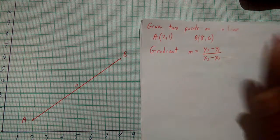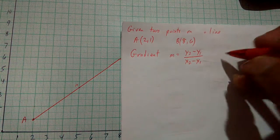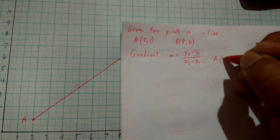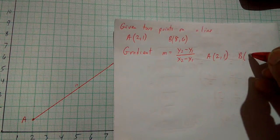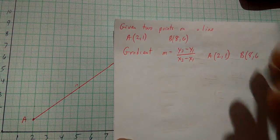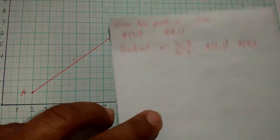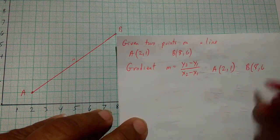In this case, these are two points. So we're going to call this A, which is (2,1), and B, which is (8,6). So let's proceed with our working.